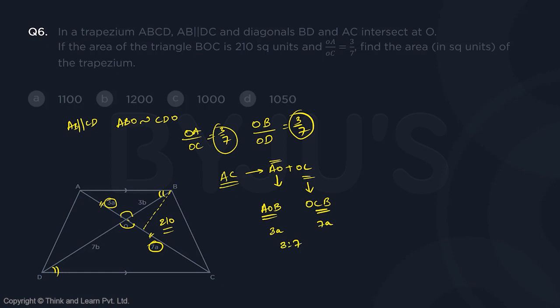So area of triangle AOB by area of triangle OBC should be 3 is to 7. And AOB is unknown. Let's call it as X by OBC. We know it is 210. So your X should be equal to 7 goes 30 times, 90. So this is 90.